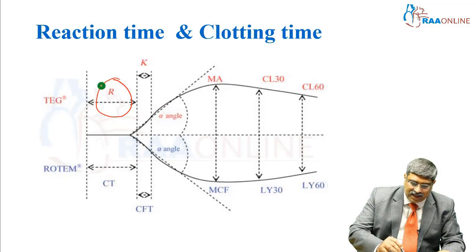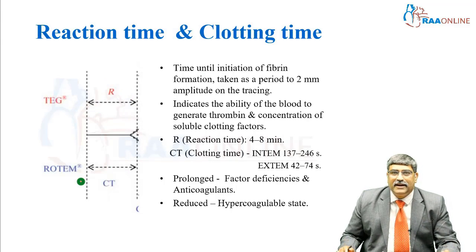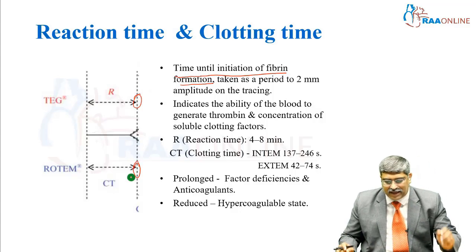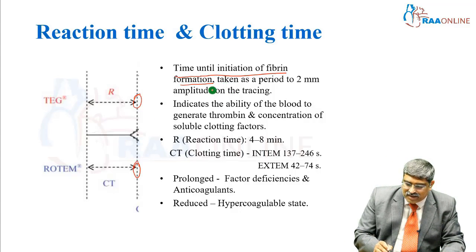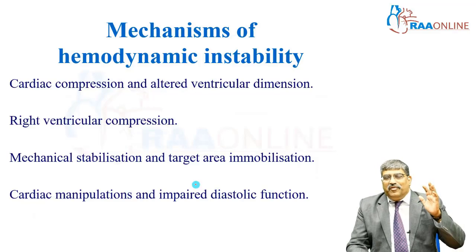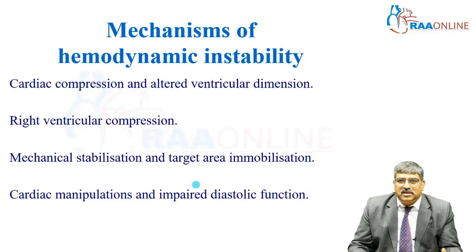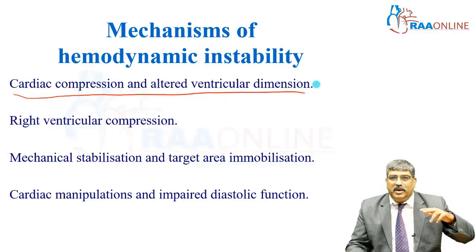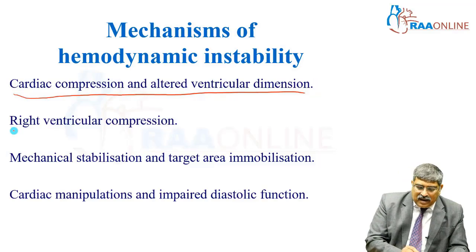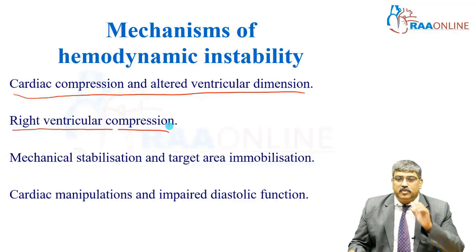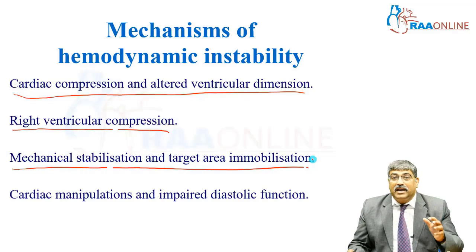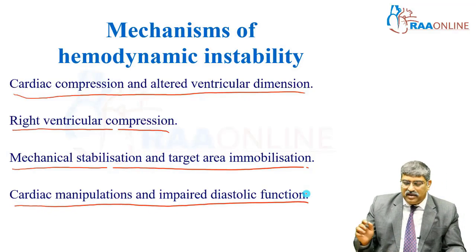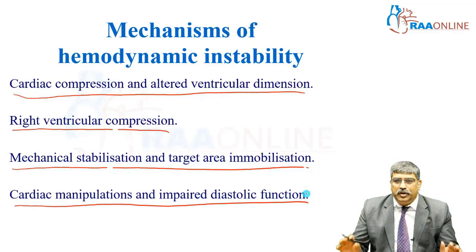The reaction time or clotting time in TEG and ROTEM is nothing but the time until the initiation of fibrin formation. The various mechanisms by which hemodynamics is affected include: cardiac compression and arterial ventricular dimension caused by the octopus and the starfish suction apparatus; right ventricular compression, which is very important during obtuse marginal grafting; and mechanical stabilization and target area immobilization, which can alter your left ventricular systolic and diastolic function.